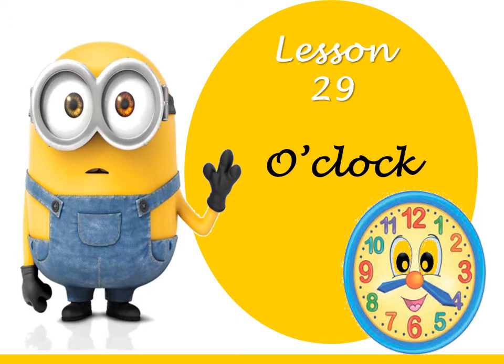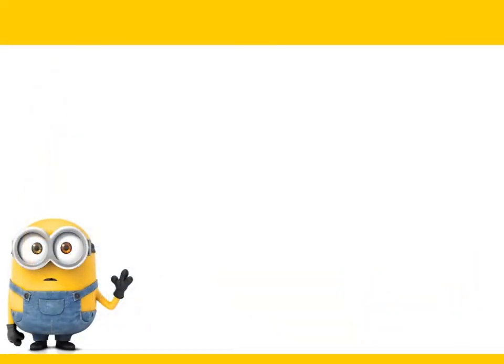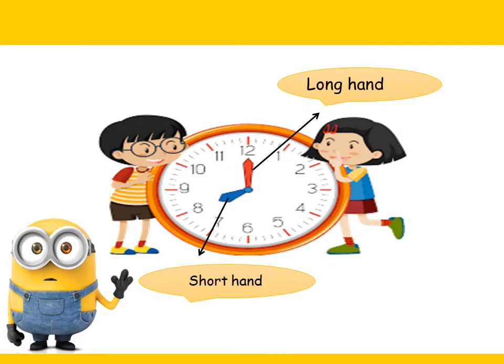It's about o'clock. Lesson 29. Lesson 29 tells us that o'clock has a long hand and a short hand. Look here at the long hand at 12 and the short hand on 8.